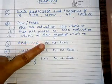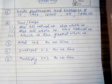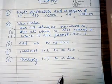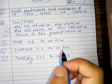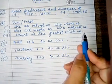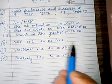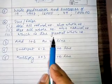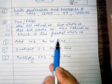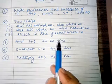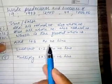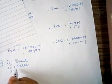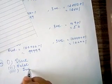The third statement is: which is the greatest whole number? We cannot say what is the greatest whole number because it goes up to infinity — we cannot count. But we can say the smallest whole number is 0, and the smallest natural number is 1. So the greatest whole number cannot be determined; it is infinity.